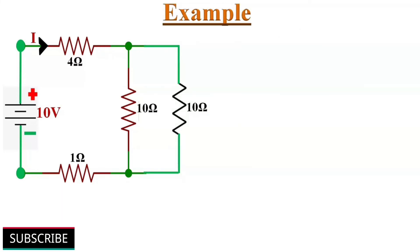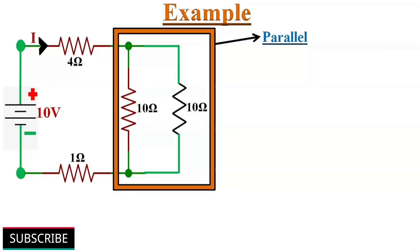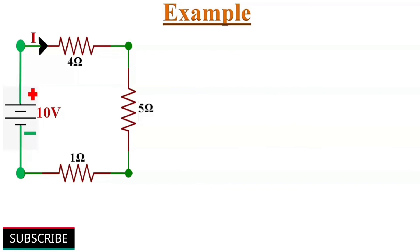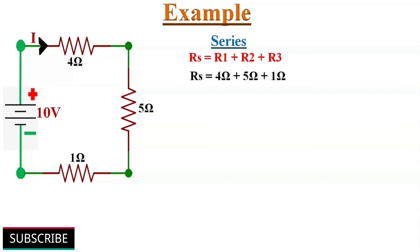Now the circuit has two 10-ohm resistors connected in parallel. We replace them with one equivalent resistor using 1/Rp equals 1/R1 plus 1/R2, which gives 1/10 plus 1/10 equals 2/10, simplifying to 1/5. Therefore Rp equals 5 ohms. So the two parallel resistors are replaced with one 5-ohm resistor. Now the circuit is just three resistors in series: 4 ohms plus 5 ohms plus 1 ohm, which equals 10 ohms total.